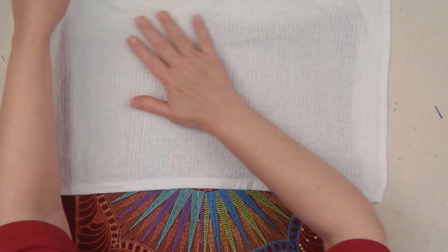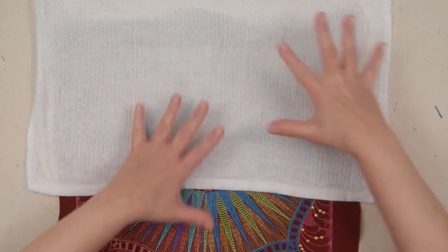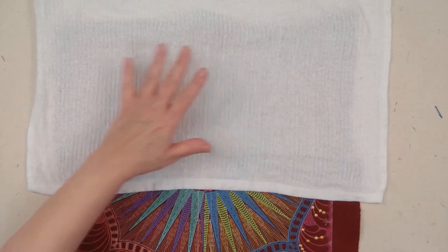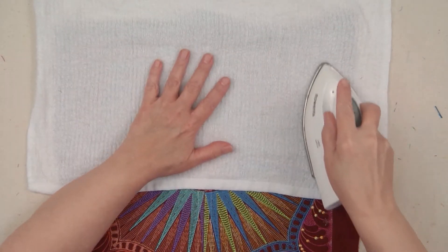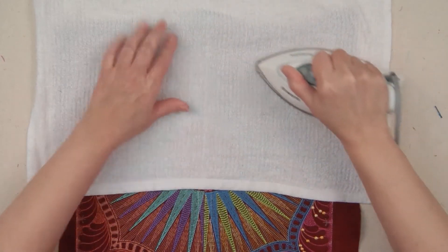I'm going to place the towel over the top of the embroidery. Make sure it's as square as it can be. You want to take a hot iron, and when the iron hits the towel, you're going to hear a sizzle.